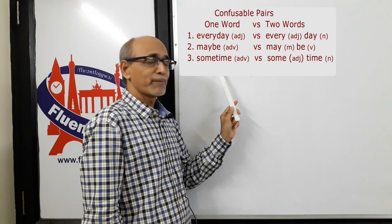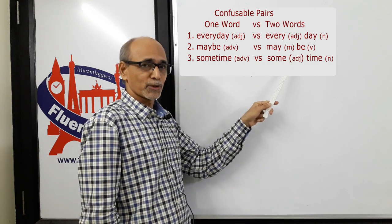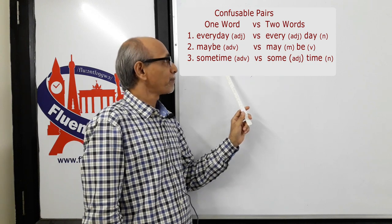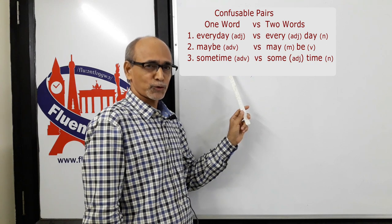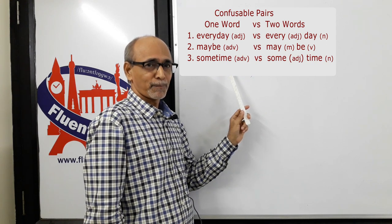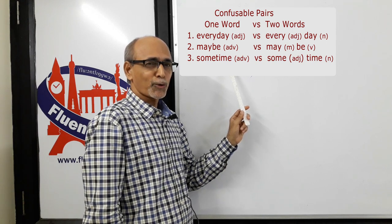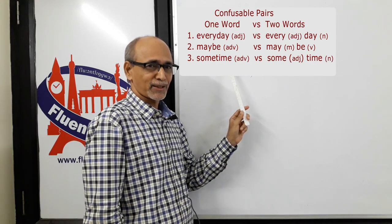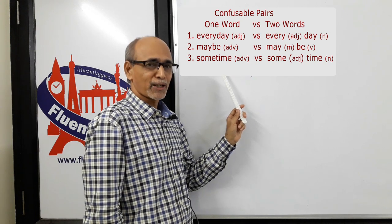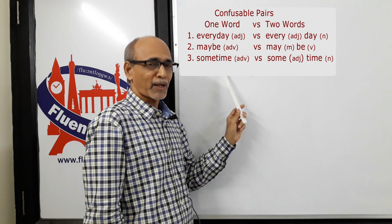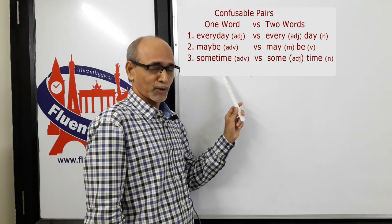The second pair is 'maybe' as one word and 'may be' as two words. When you take 'maybe' as one word, it's an adverb. That means you already have a sentence, for example 'he will come here tomorrow,' and you want to add the meaning of 'perhaps' to that sentence. Then you write 'maybe' at the beginning: 'Maybe he will come tomorrow' or 'Maybe he will pass the test.' So 'maybe' as one word is an adverb.